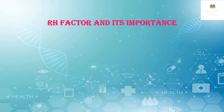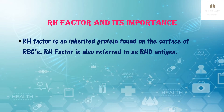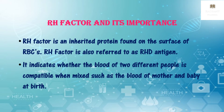Now let us know what is RH factor and what is its importance. RH factor is an inherited protein found on the surface of red blood cells, also referred to as RH D antigen. If your blood has this protein, you are RH positive; if your blood lacks this protein, you are RH negative. RH factor is an important characteristic of red blood cells — it indicates whether the blood of two different people is compatible when mixed.